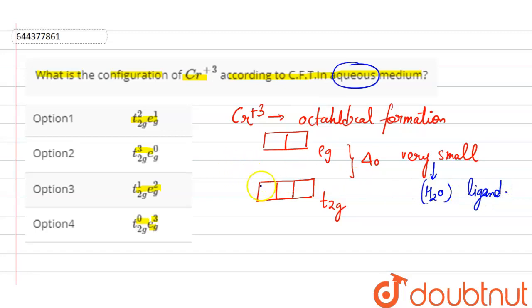So the gap is very small. That means if you fill the configuration, then 1, 2, 3. This will be the configuration. So the configuration is T2G3 EG0. That means the correct option is the second option. Thank you.